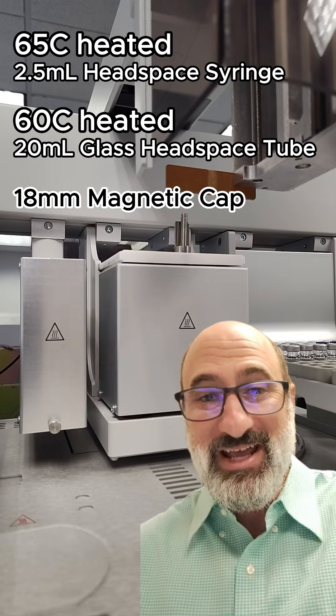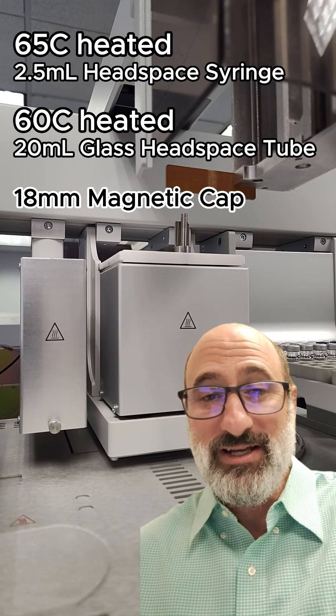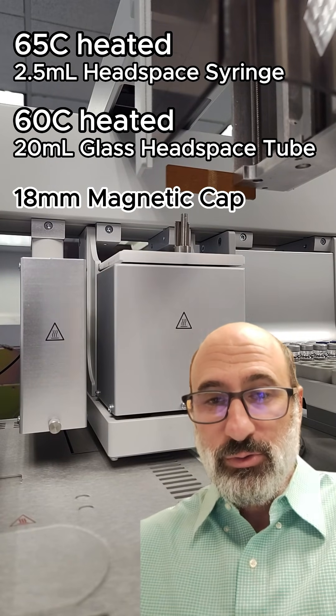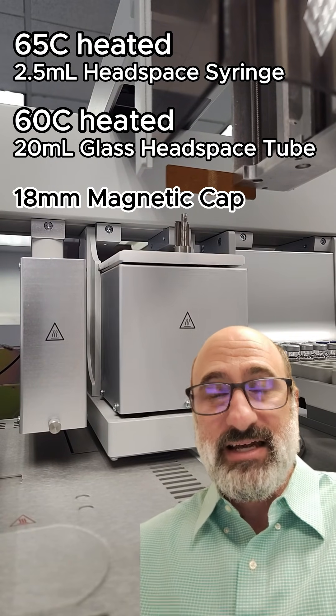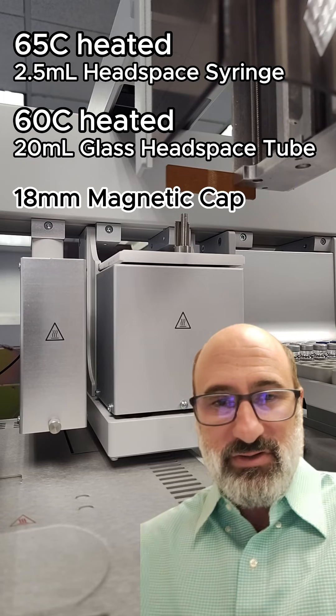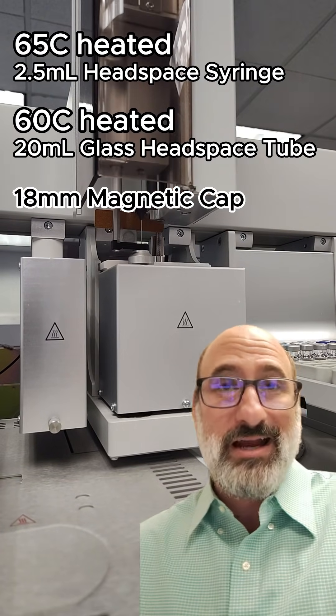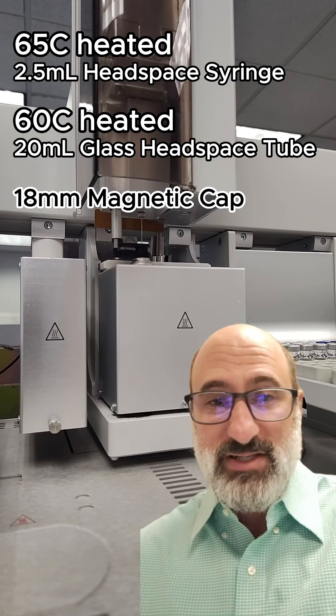You can see the headspace syringe is actually heat jacketed so you don't get condensation inside the syringe. You got to run that one at 65 degrees because you don't want to lose any of the volatiles. If you run the syringe five to ten degrees hotter, that's my trick to ensuring no carryover when you're doing these headspace injections.